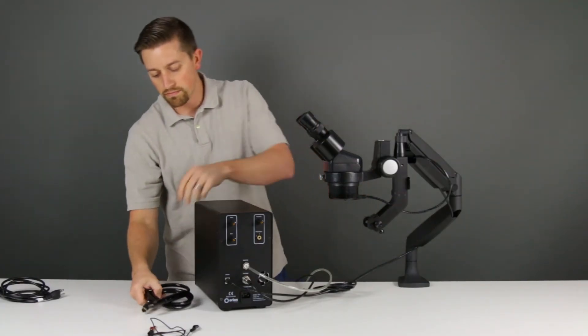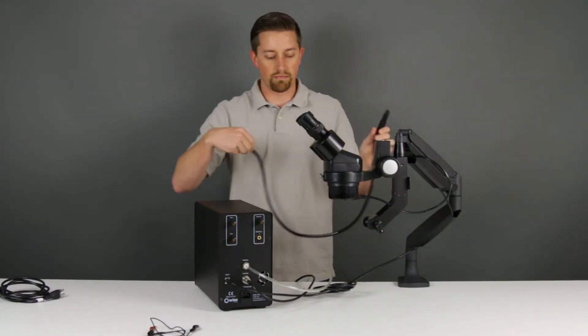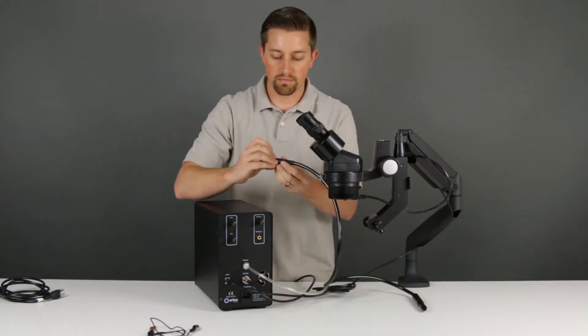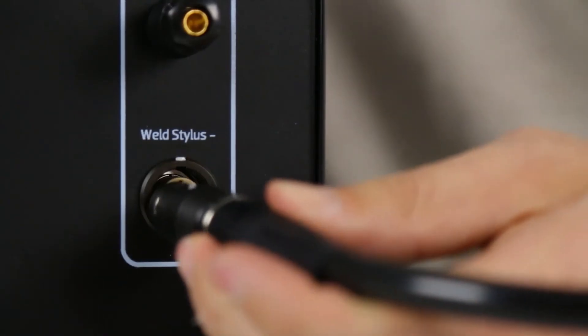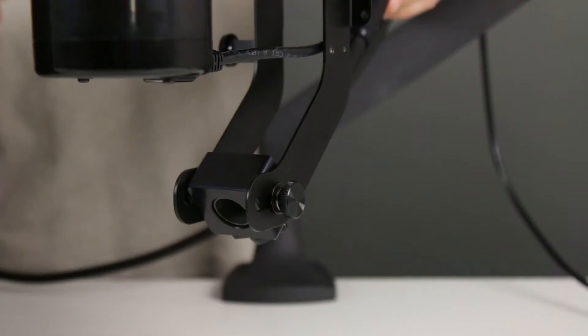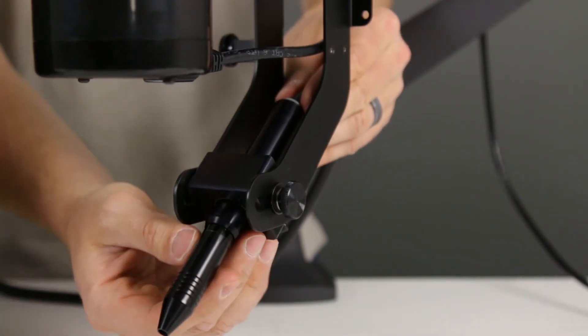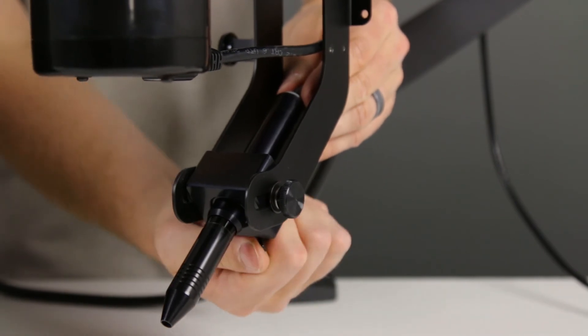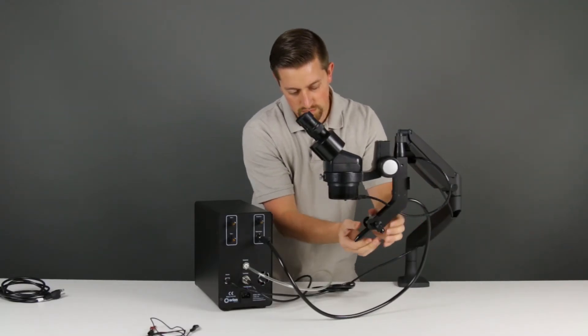Plug the stylus into the port marked weld stylus on the back of the welder. Line up the white markings on the port and the connector. Mount the stylus to the arm by inserting the stylus into the mount and tightening the screw below the mount to secure the stylus into place. Ensure the end of the electrode is centered in the view of the scope.